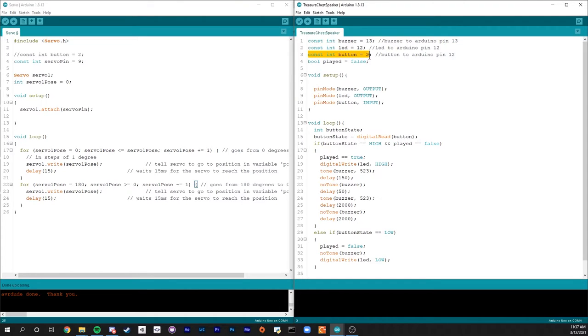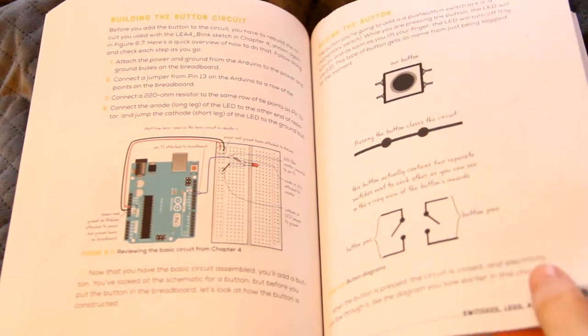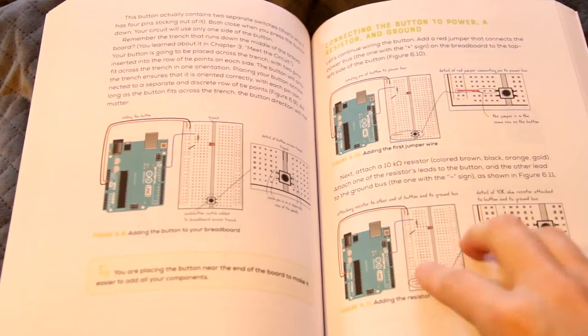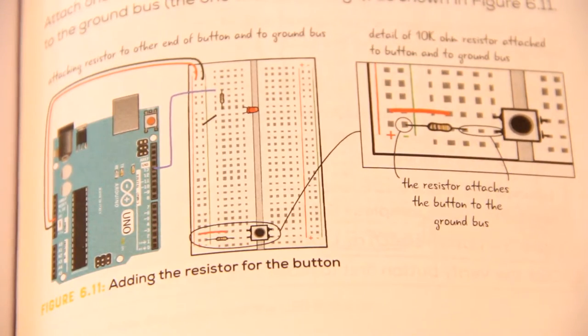Then I tested just the button on its own. Here it helps to leverage off of your previous projects because we've already coded a lot of buttons. As always I follow the guidelines and diagrams provided in the book to give me structure when I'm designing my circuits.